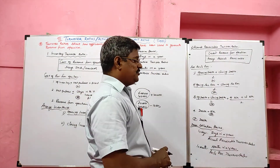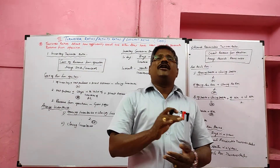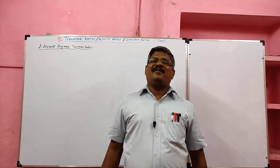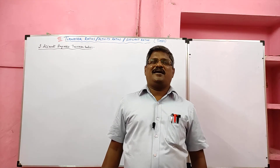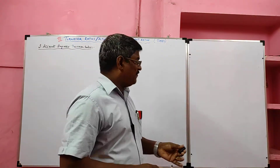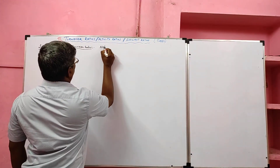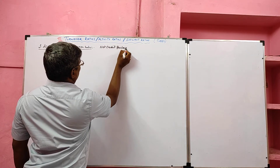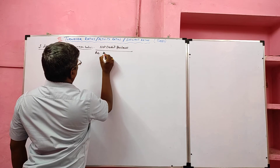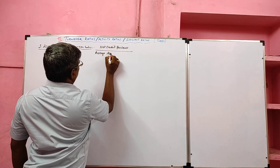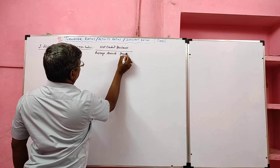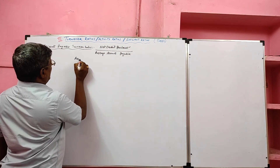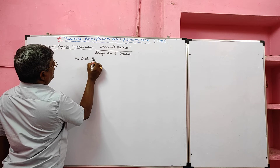In turnover ratio there are four items, of which we have completed two ratio formulas. Now we learn the formula of the third ratio: accounts payable turnover ratio. The formula is: net credit purchases divided by average accounts payable. Net credit purchases are always given; we have to find average accounts payable.